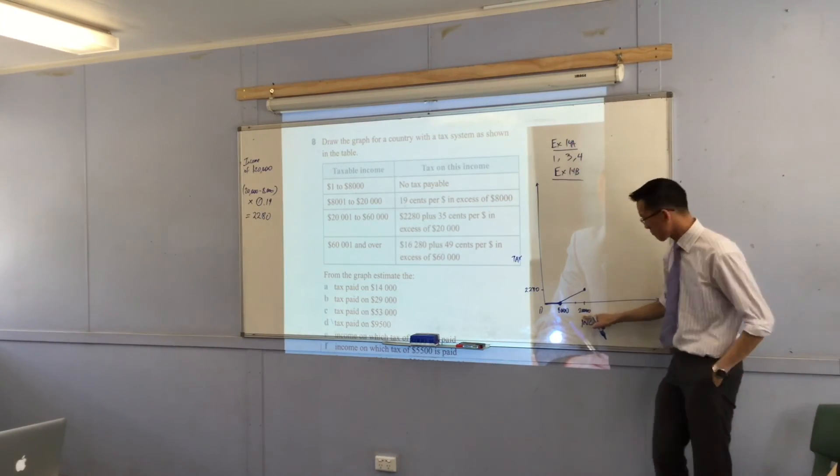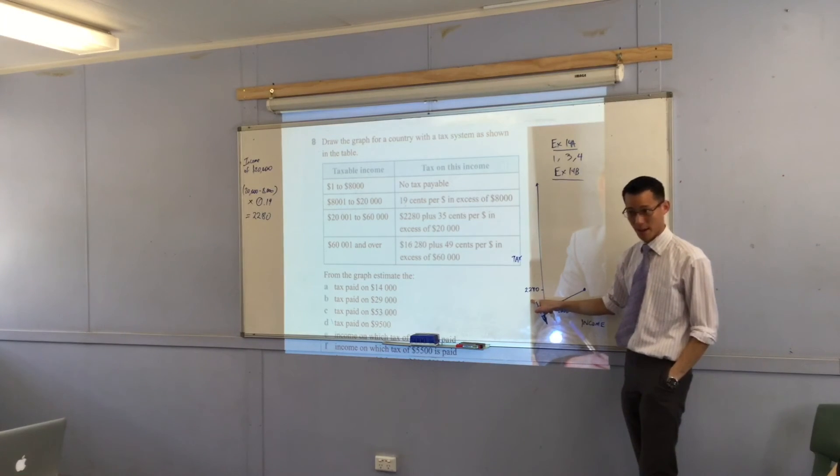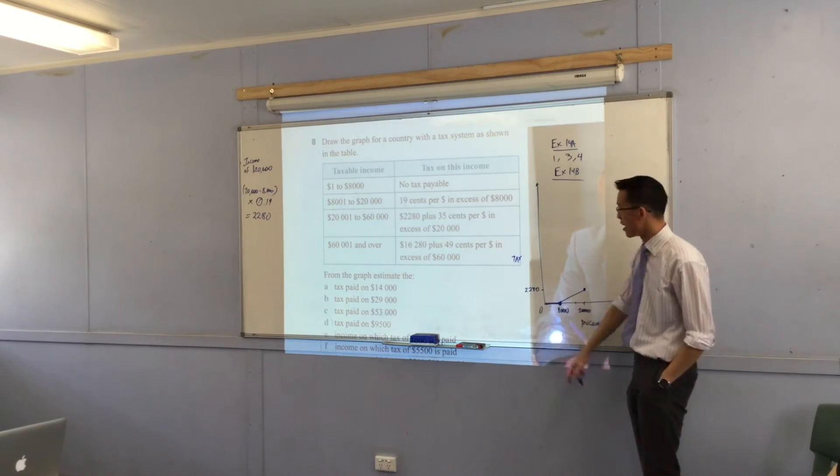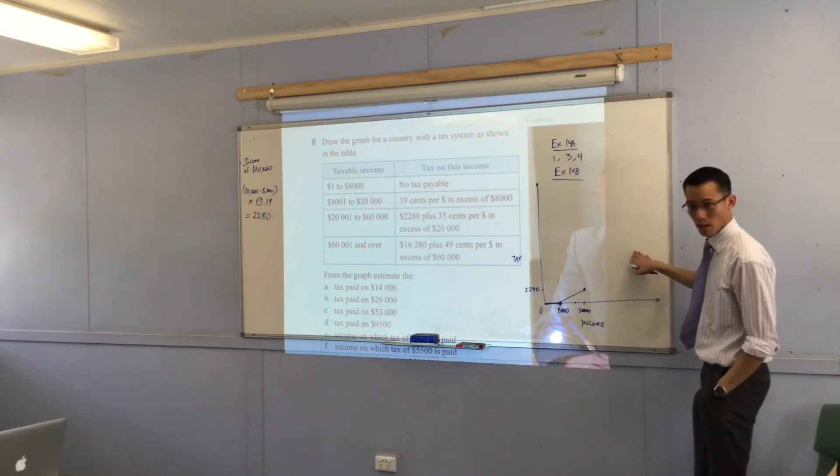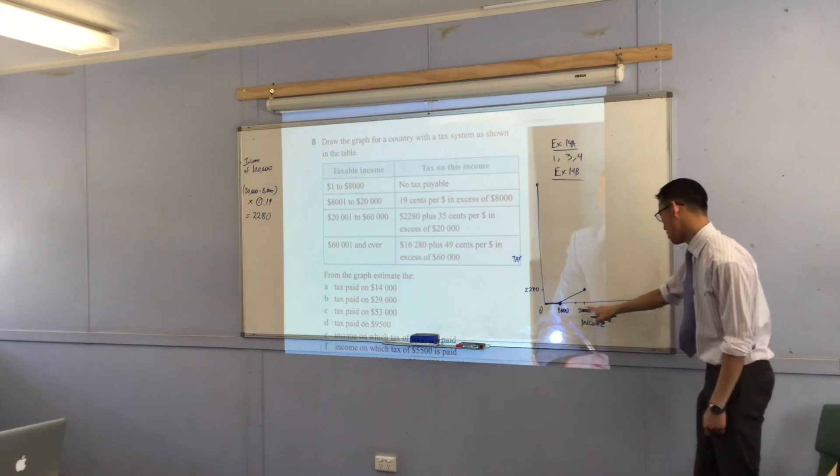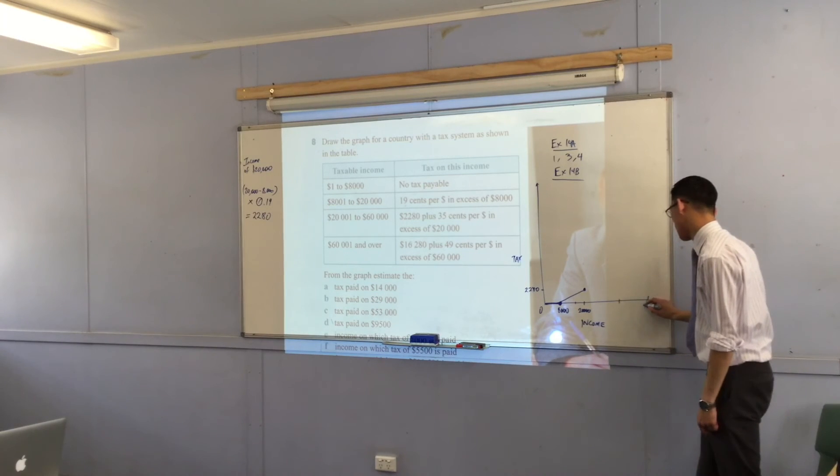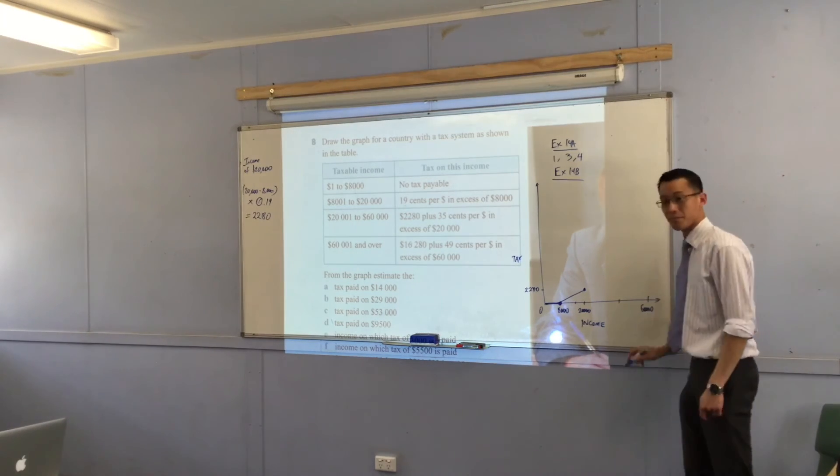I'm almost there. Have a look. What's the next bracket over? The next amount, look. It's $60,000. Good. So that's $20,000. So I need to go another three times. So over here, over here. So there's $60,000. Okay.